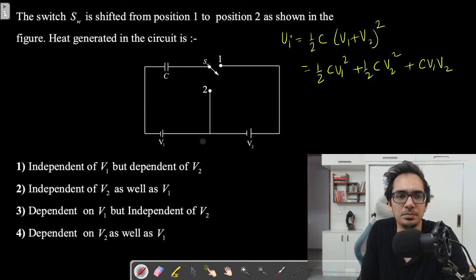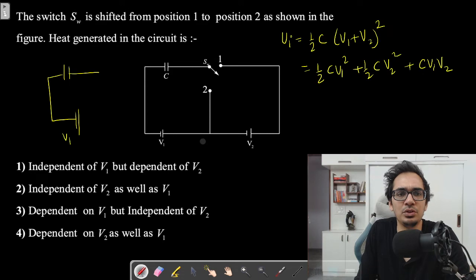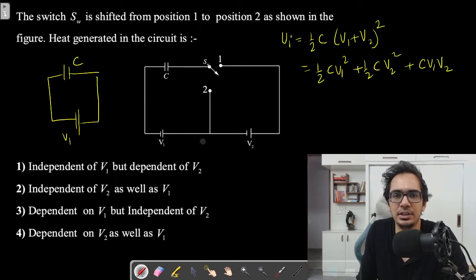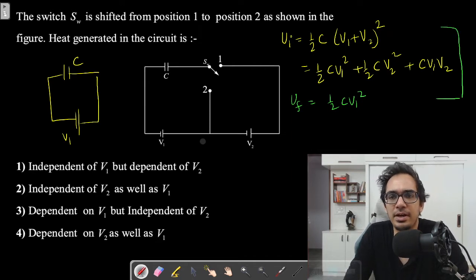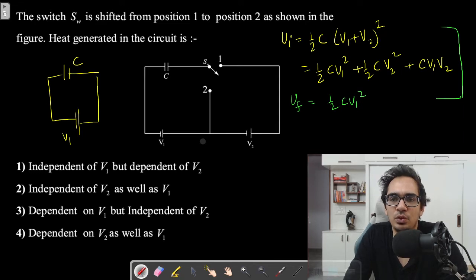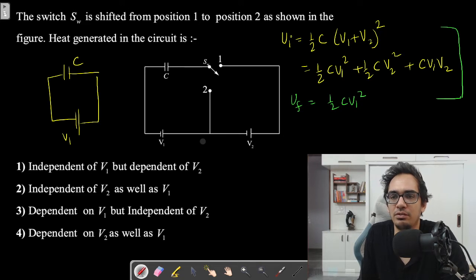When you connect the circuit in position two, only V1 is connected. The final energy is equal to ½CV1². Now, computing initial minus final energy, the ½CV1² terms cancel, leaving ½CV2² + CV1V2. This depends on both V1 and V2.